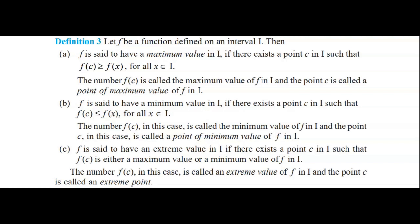Let f be a function defined on an interval I. Then f is said to have a maximum value in I if there exists a point c in I such that f(c) is greater than or equal to f(x) for all x belonging to I. The number f(c) is called the maximum value of f in I, and the point c is called the point of maximum value of f in I.